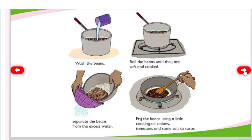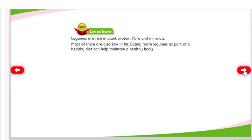Steps to prepare beans: wash the beans, boil the beans until they are soft and cooked, separate the beans from the excess water, fry the beans using a little cooking oil, onions, tomatoes, and some salt to taste. Legumes are rich in plant protein, fiber, and minerals. Most of them are also low in fat. Eating more legumes as part of a healthy diet can help maintain a healthy body.